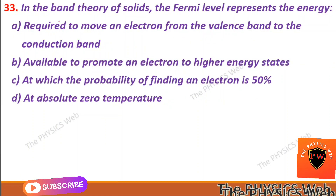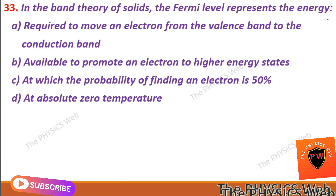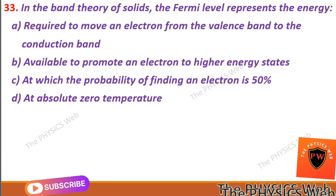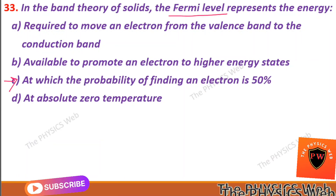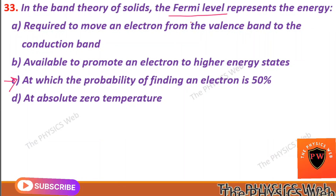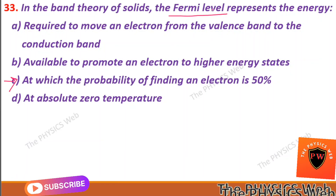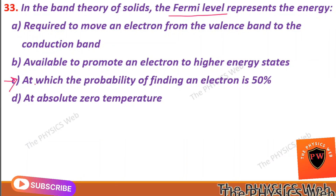Next, question thirty-three: in the band theory of solids, the Fermi level represents the energy at which the probability of finding an electron is 50%. So C is your correct option. This question is very important — we have discussed Fermi energy as the average energy of electrons at zero temperature. In another way, you can define the Fermi energy as the energy at which the probability of finding an electron is 50%.